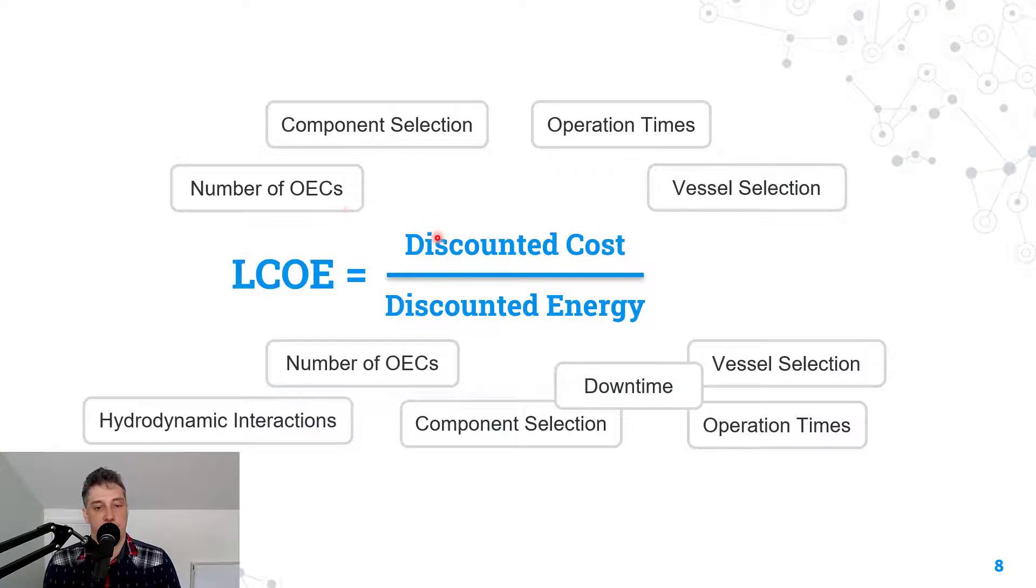Looking at the top we have the number of ocean energy converters, the components that are chosen, the logistical times, the operation times, and the vessels that are used in those logistics. There are other things as well, as an example.